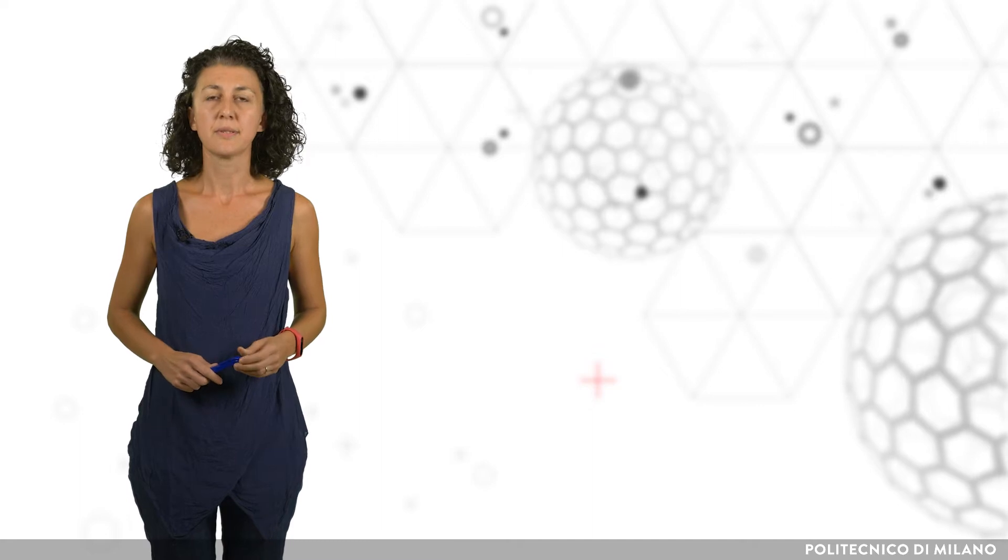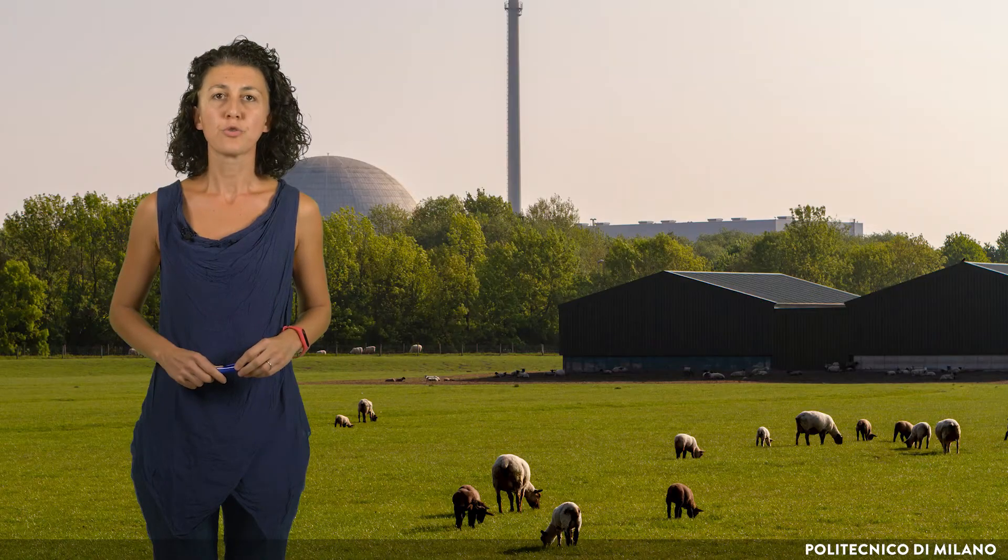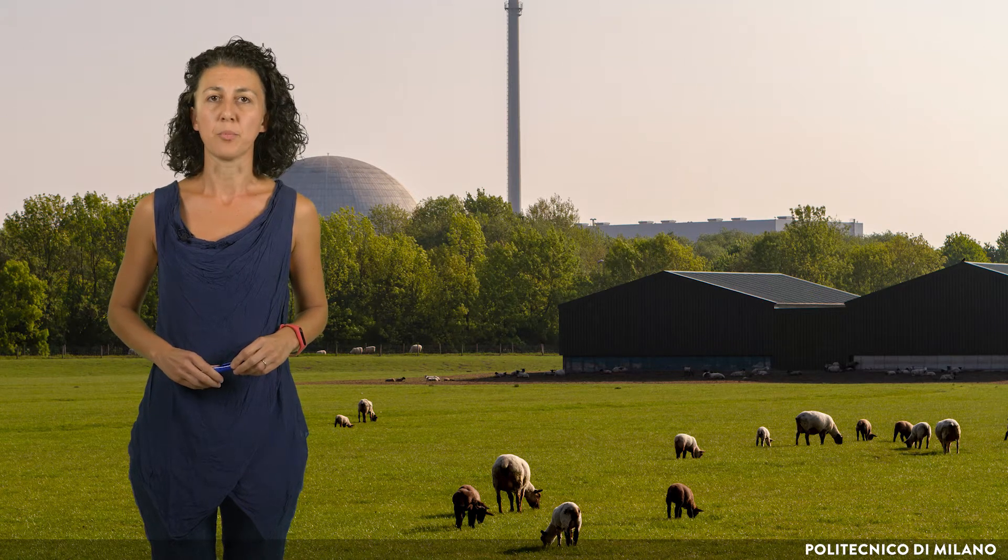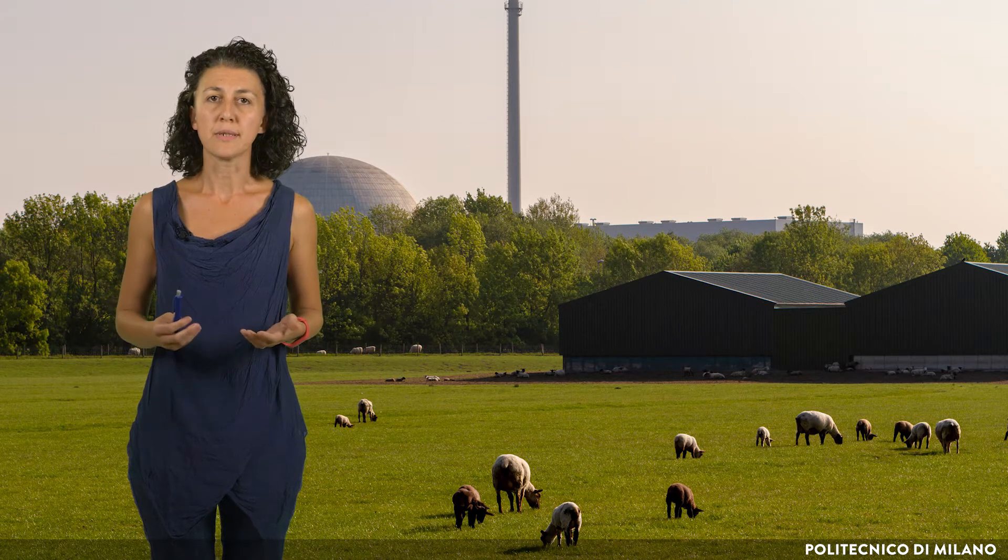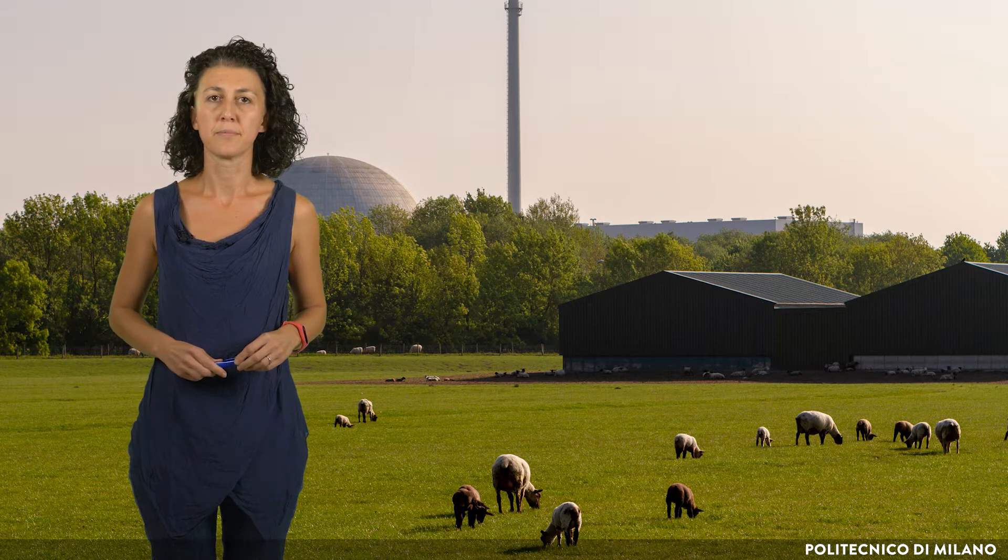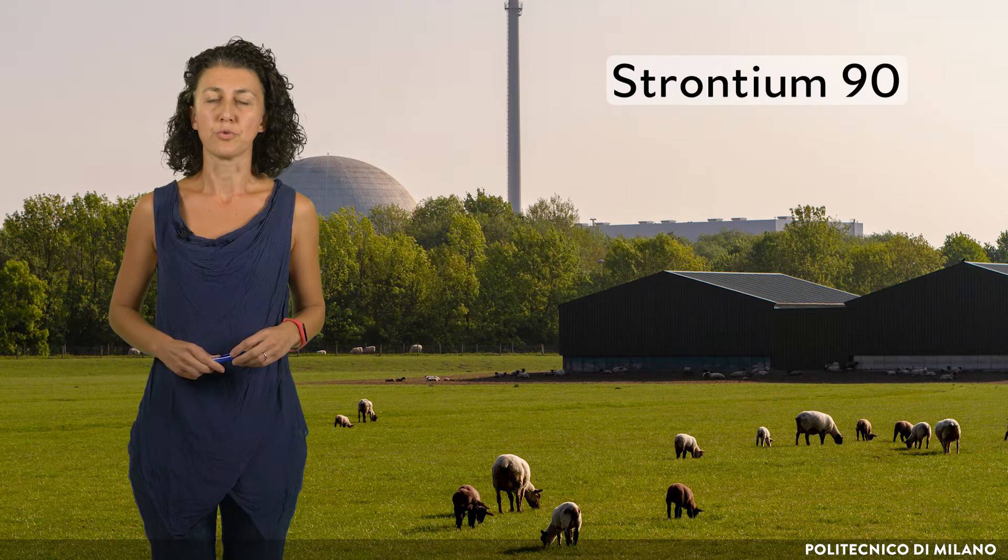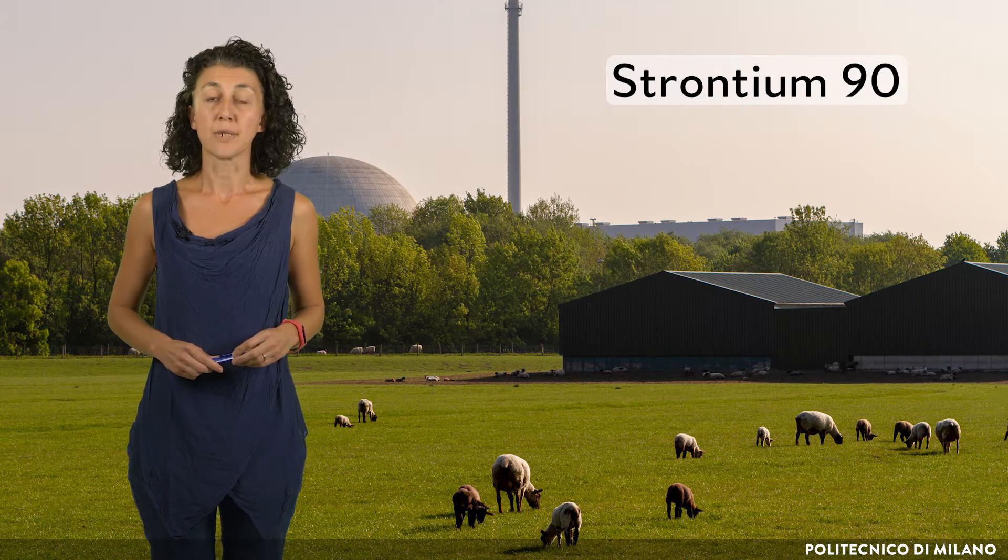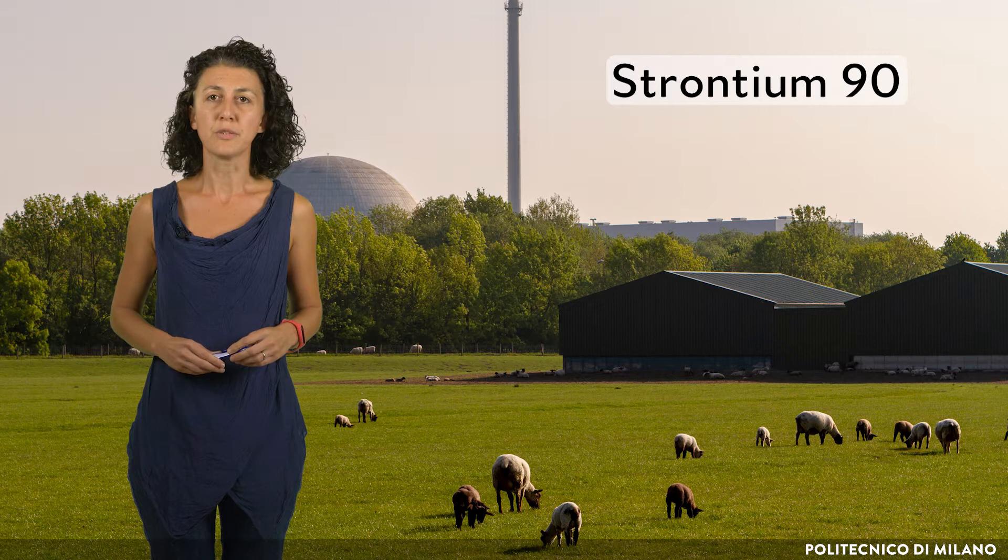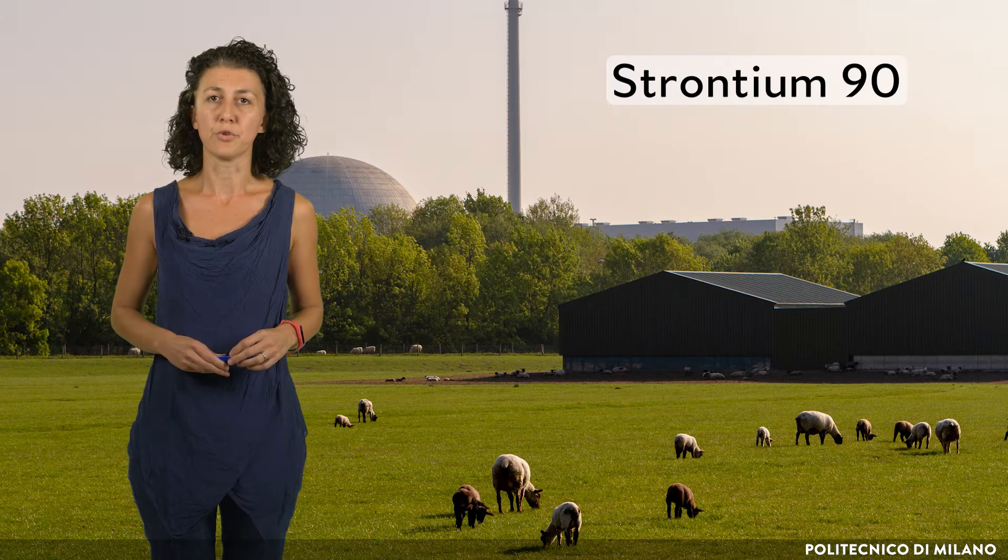Let's consider now the determination of artificial radiostrontium in milk. Strontium presence in environmental samples or food is a good indicator of radioactive contamination from a nuclear power plant. Indeed, strontium-90 is an isotope of concern in fallout from nuclear accidents, but also in monitoring the areas surrounding a nuclear power plant, even if not working.